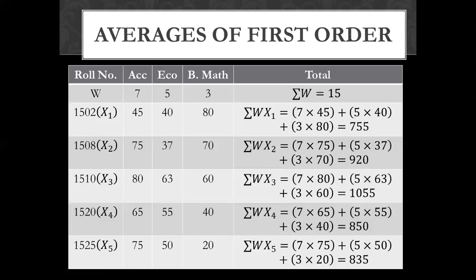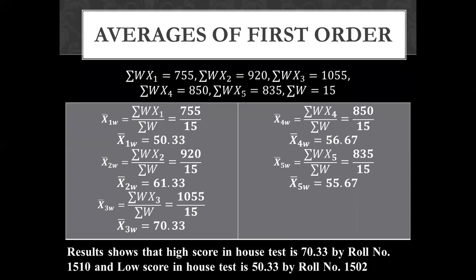Now we will divide each weighted total by the total weight to get the arithmetic weighted mean. The formula is: weighted mean = sum of (w × x) divided by sum of w, where the weights are 7, 5, and 3.